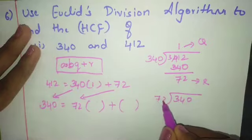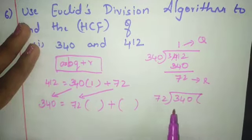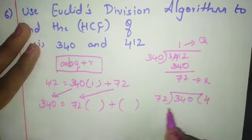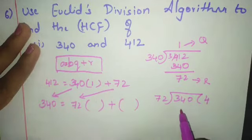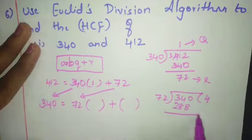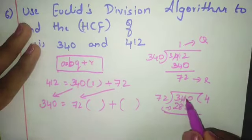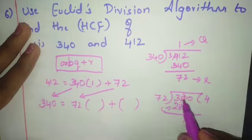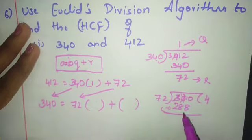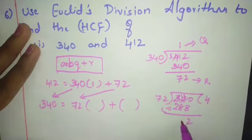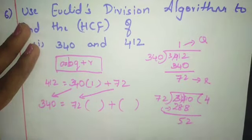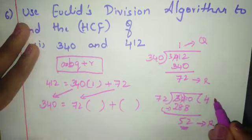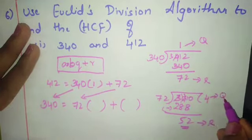Divide 340 by 72. 72 × 4 is 288. Subtracting: 340 minus 288 gives remainder 52. So the quotient is 4 and the remainder is 52.